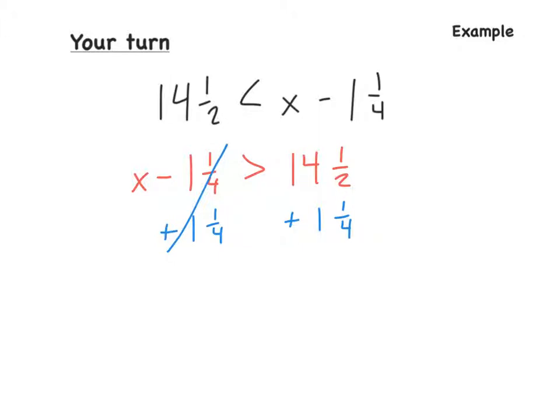So those cancel out. All we have left is x is greater than. So when we add these, let's add the whole numbers first. So if we have 14 plus 1, that is 15. Now we just have, off to the side, I'm going to deal with the 1 half and the 1 fourth. So if we do that, we have 1 half plus 1 fourth. We need similar denominators.